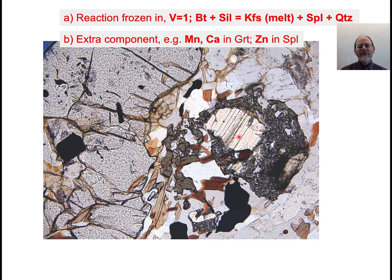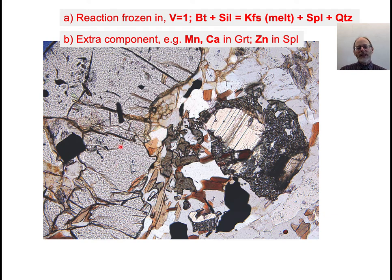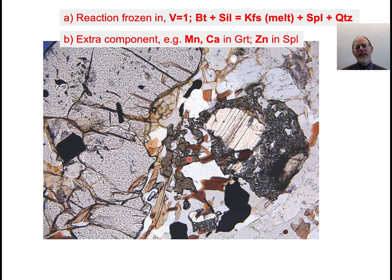It's also possible that this is not a pure KF-MASH chemical system. It certainly does have K, Fe, Mg, Al, Si, and hydrogen, but there can be other components as well. Garnets have manganese and calcium, so those could be additional components. It's also possible that spinels can take up zinc, which can pull them off the AFM plane, allowing four or more coexisting phases. Staurolite also likes to take up zinc, which can stabilize it even when it would not normally be stable.